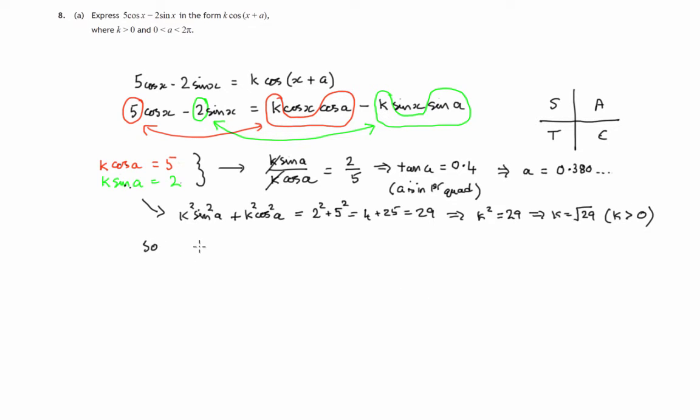So finally, just to double check that we know what we've discovered. 5 cos x minus 2 sin x is equal to the square root of 29 times the cosine of x plus this angle 0.380 and so on. So that's us completed part A. Let's now move on to part B.